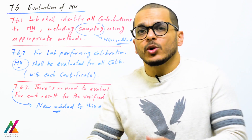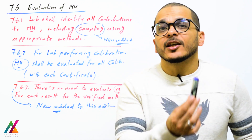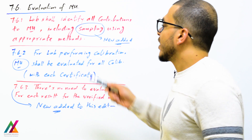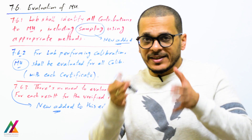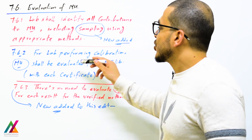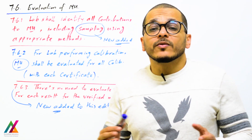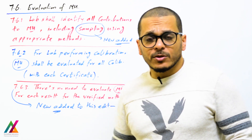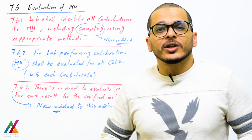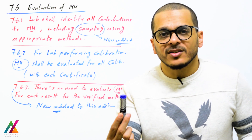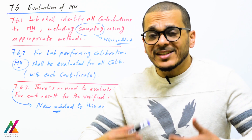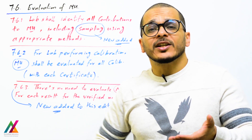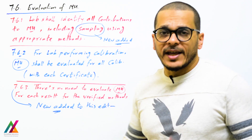When you calibrate any of your equipment with a calibration laboratory, you will receive a certificate including measurement uncertainty. Calibration laboratories shall evaluate measurement uncertainty for all calibration activities, so you receive this measurement uncertainty with each certificate. An important point: there is no need to evaluate measurement uncertainty for each individual result. For verified methods, you only need to quantify measurement uncertainty during validation or verification. After that, you simply add the measurement uncertainty obtained during validation or verification to the final results.